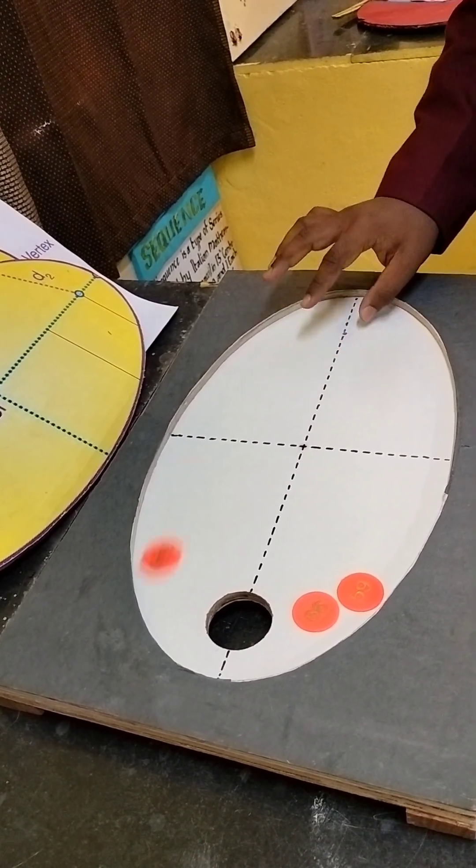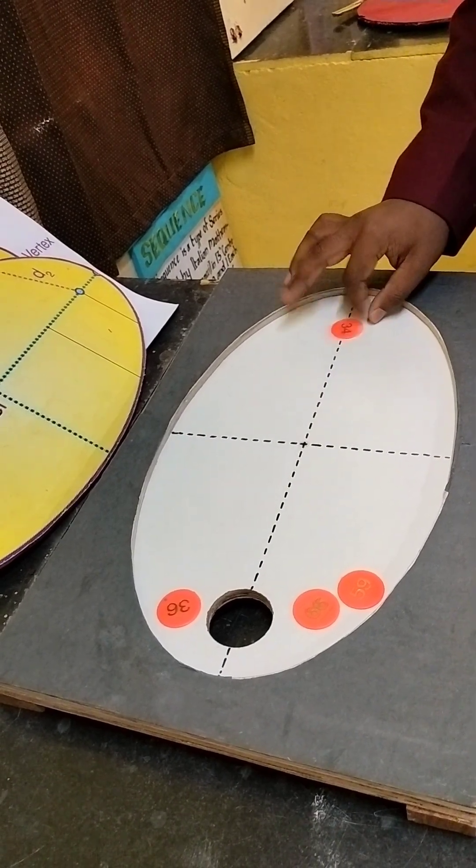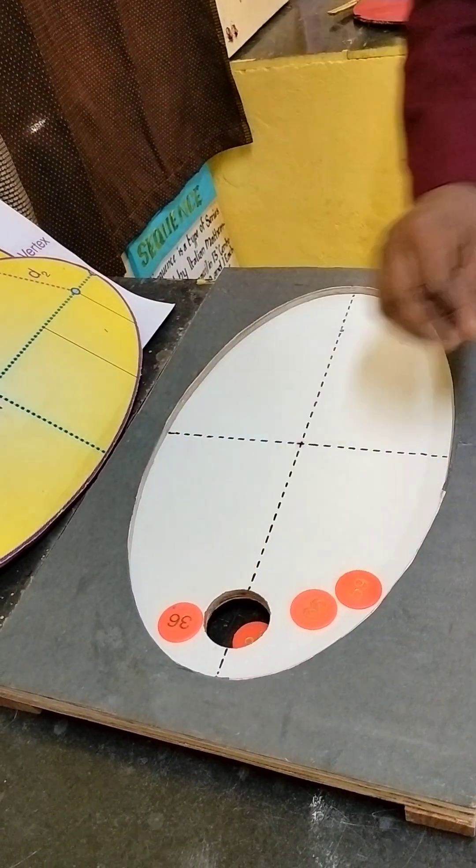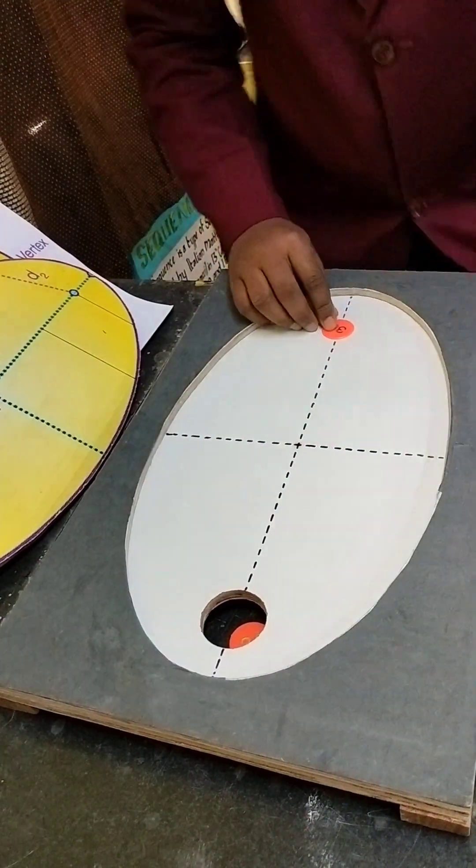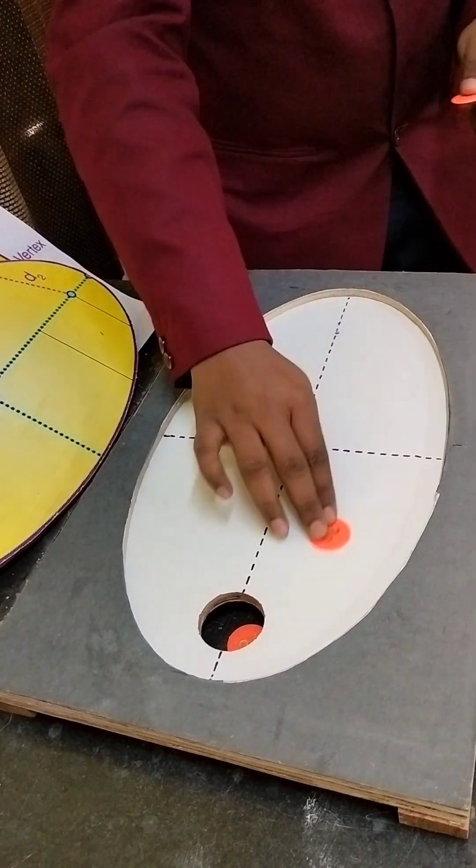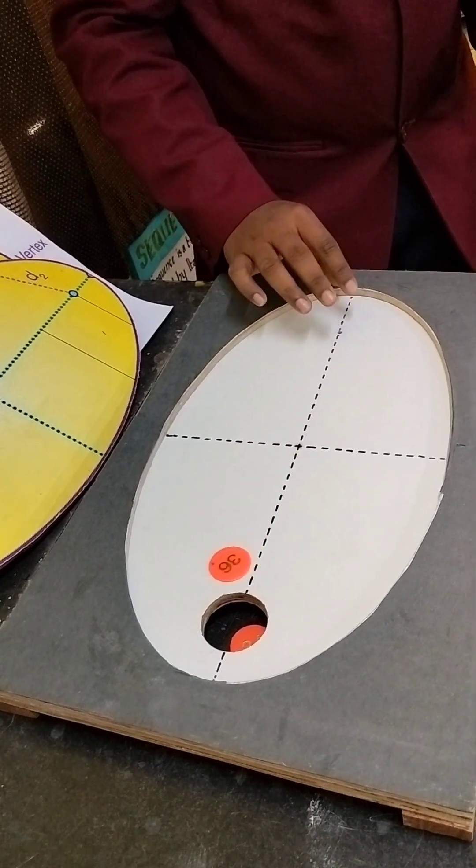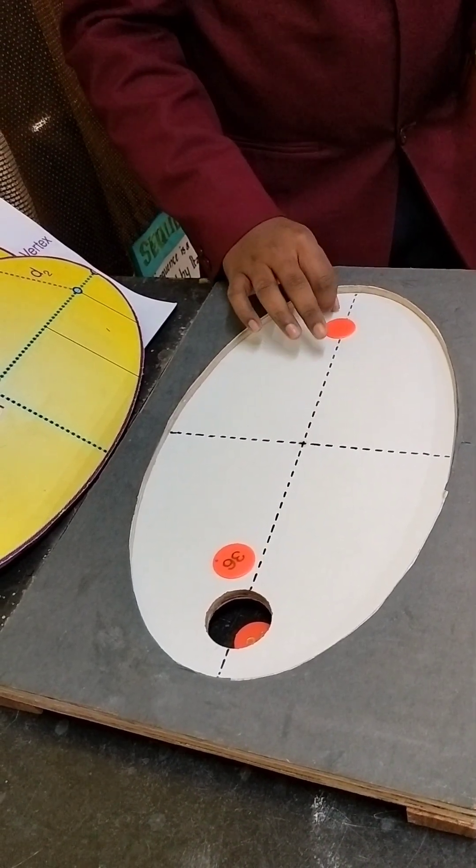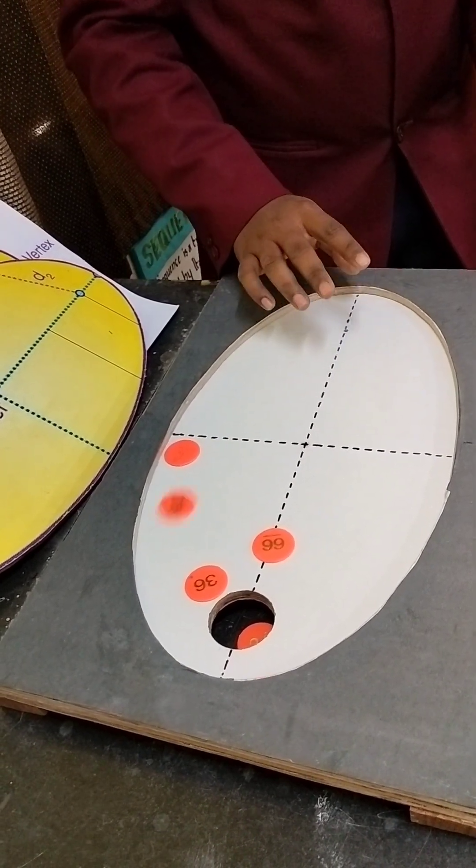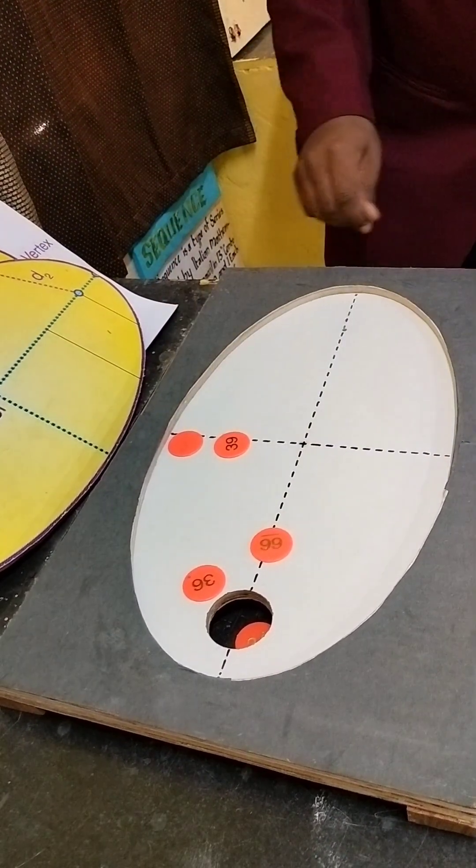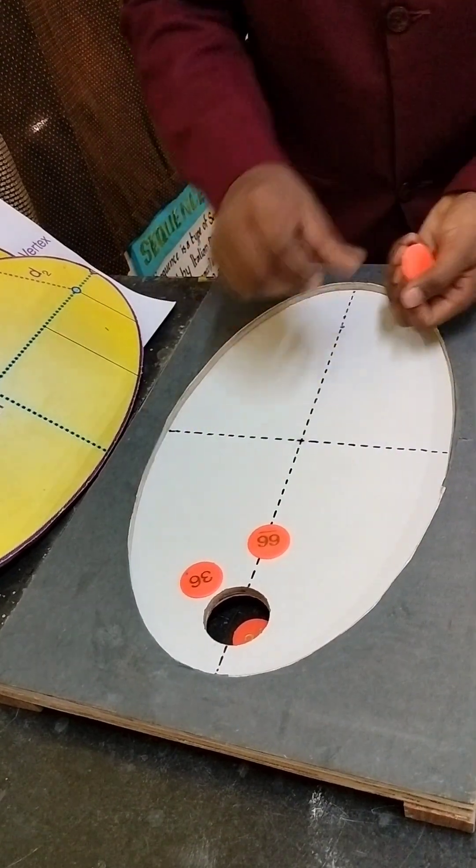See, the striker went inside that hole. Similarly, if we hit at any point here, the striker will always go in that direction. You'll see the striker always goes in that direction.